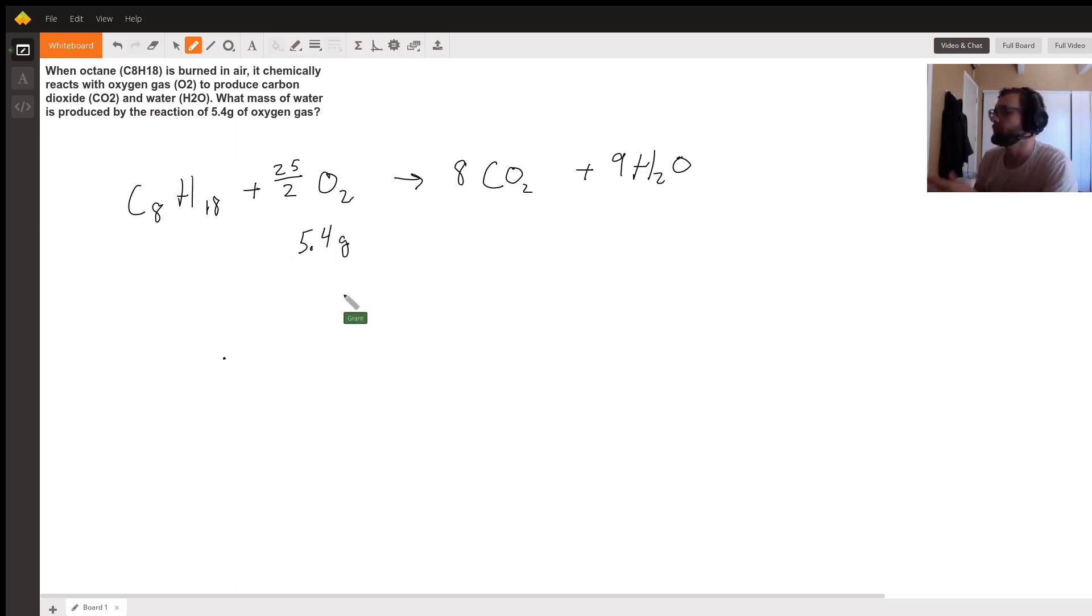In order to compare things, we're going to have to convert into moles using dimensional analysis. We've got 5.4 grams of oxygen. If you go to the periodic table, oxygen weighs approximately 16 grams per mole, but this is diatomic, so we have 32 grams of O2 in one mole of O2. We take 5.4 divided by 32 and we'll get 0.16875 moles of oxygen.